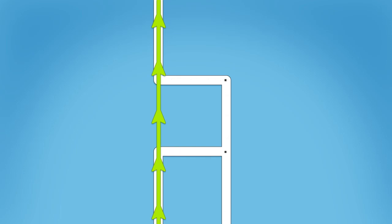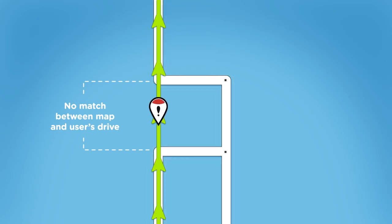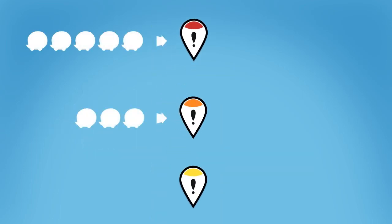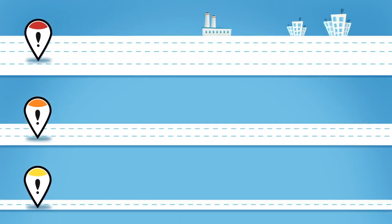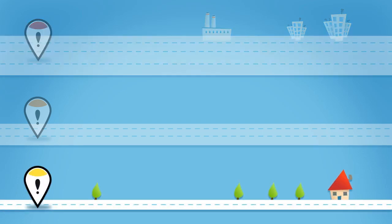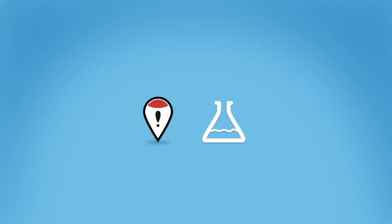When the Waze system identifies a discrepancy between these routes and what's allowable according to the existing map, a problem is identified and its urgency indicated. We determine the severity of the problem by evaluating how many people will be affected by the map error. Naturally, problems in high-volume areas will appear as red, while problems in your local neighborhood might appear as yellow. To help you pinpoint the exact nature of problems detected by the system, we've developed this color-coded system.